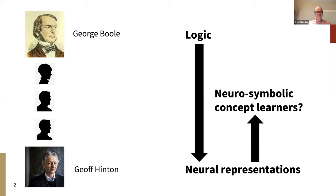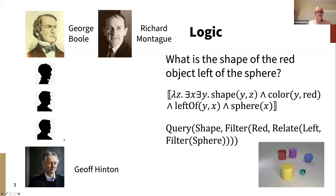For the kind of things we're interested in here, George Boole is really the wrong person to mention. Using symbolic models for tasks like language is really much more the work of people like Richard Montague, who developed the idea that you could compositionally convert a human language sentence — like 'what is the shape of the red object left of the sphere' — into a predicate calculus representation. That's essentially what symbolic learners use, representing a lightweight functional program where you filter objects, find things related by being on the left, filter on red ones, query the shape, and get the answer: cylinder.